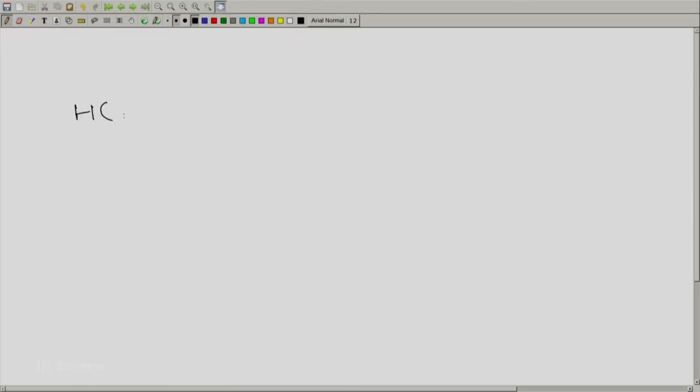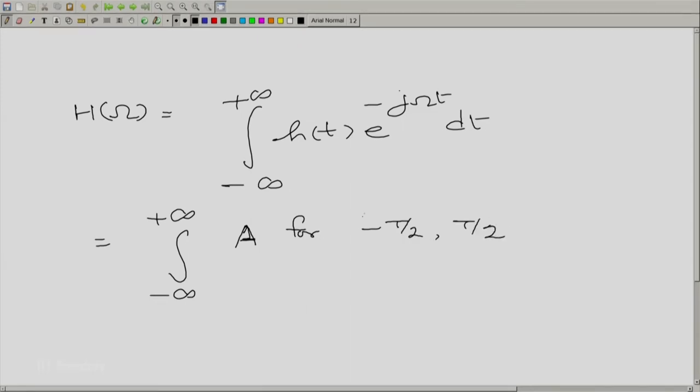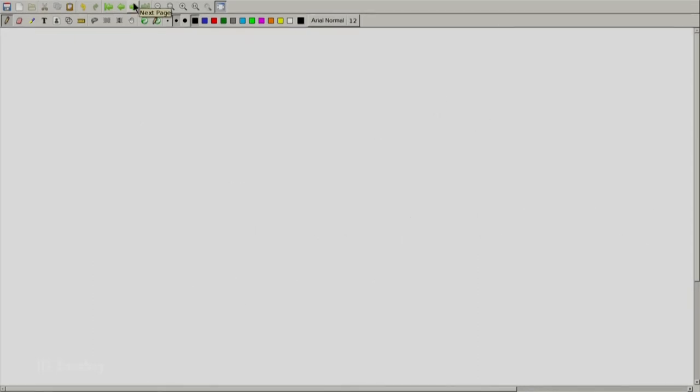The Fourier transform capital H of omega is going to be given by integral from minus to plus infinity h of t e raised to the power minus j omega t dt. And that is the same as, well, a for minus T by 2 to plus T by 2, 0 else. This function multiplied by e raised to the power minus j omega t dt.